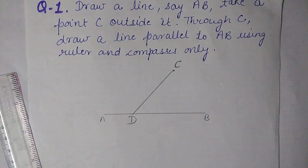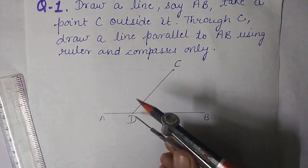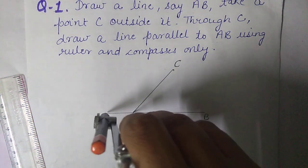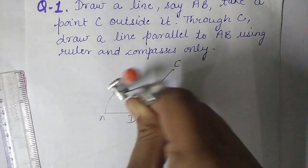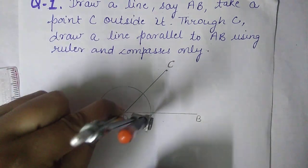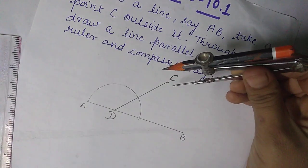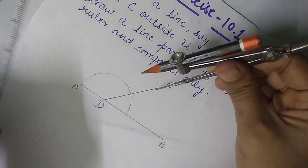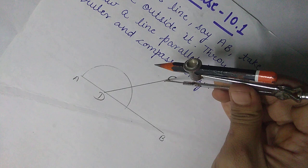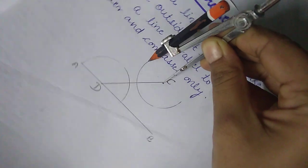After that, take your compass. Put the needle of the compass on point D and with an appropriate radius draw a semicircle on this point. So I have drawn a semicircle with D as center.